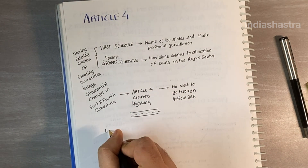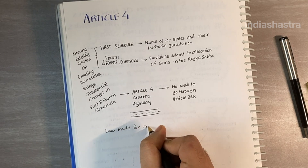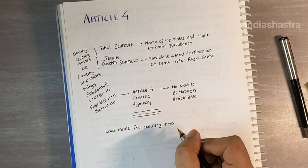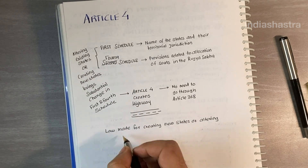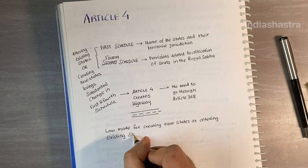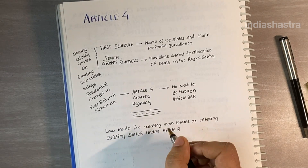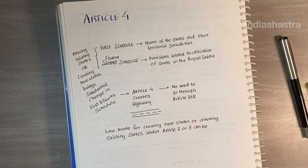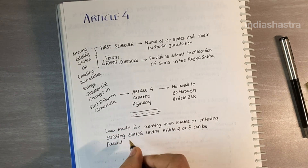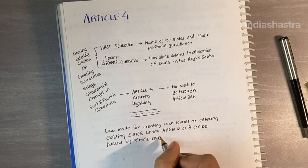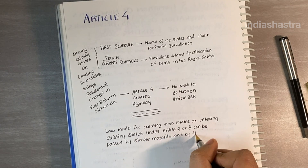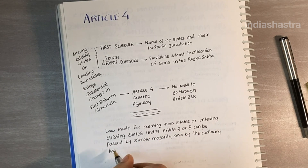In other words, a law made for creating new states and altering existing states under Article 2 or 3 can be passed by a simple majority and through the ordinary legislative process.